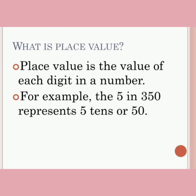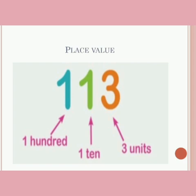To understand the expanded form better, let's see what is place value. Place value is the value of each digit in a number. For example, the 5 in 350 represents 5 tens, or 50. In the number 113, 3 is in the unit's place, 1 in the 10's place, and 1 in the 100's place. Here, even though the digit 1 is the same in the 10's place and 100's place, its value is different.